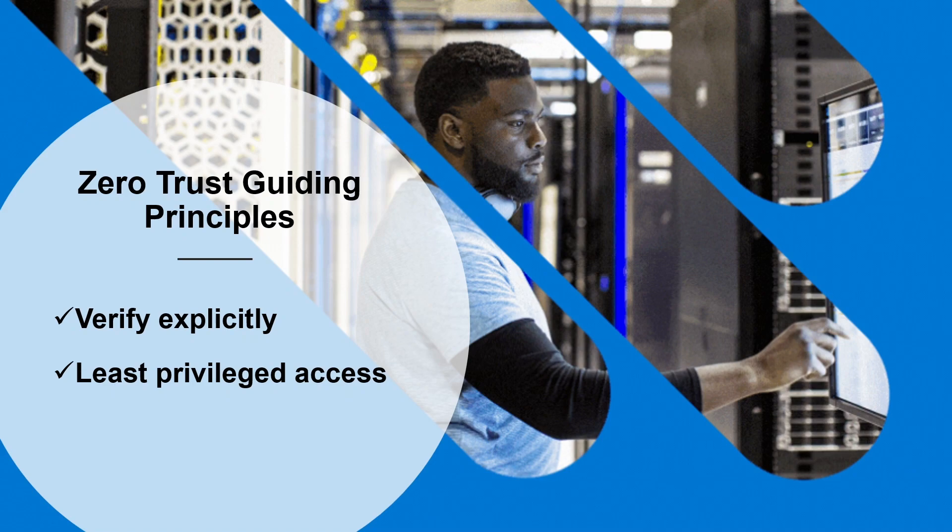The second principle is least privileged access. This means that you should limit user access with just-in-time and just-enough access, which is usually known as JIT or JEA. Other ways you can limit privileged access is by implementing risk-based adaptive policies and data protection to protect both data and productivity.